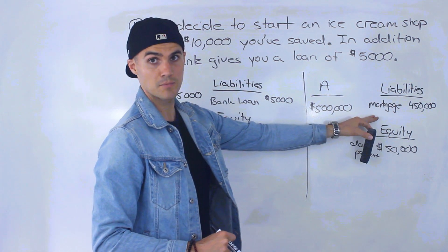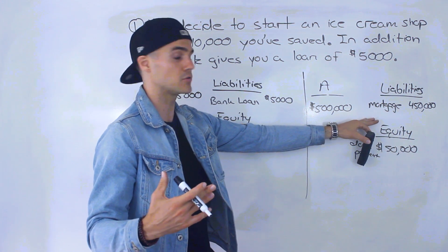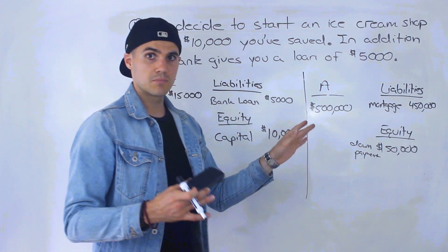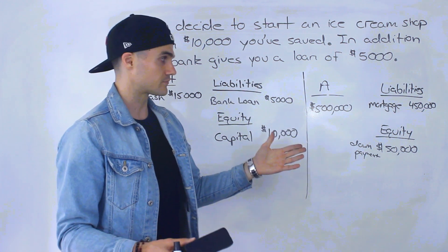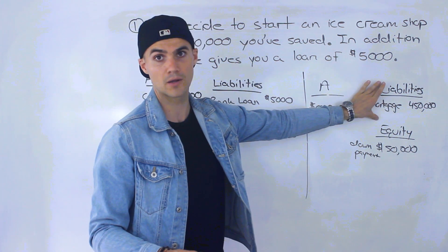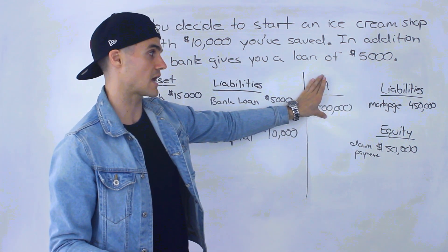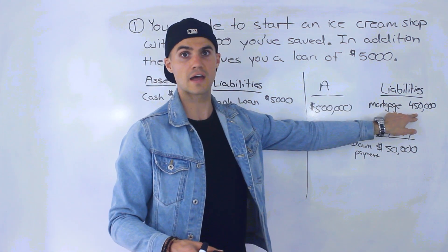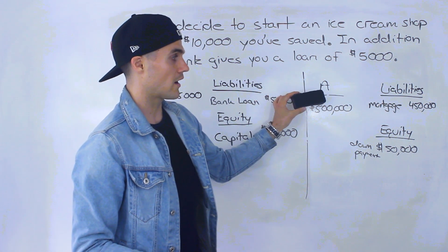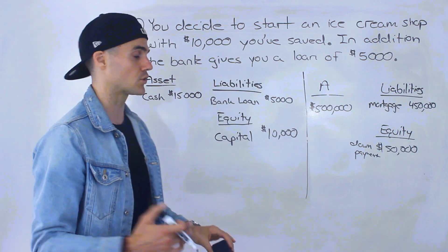What if you start missing the payments on this mortgage loan? Let's say an unfortunate incident happens — you lose your job and can't make the payments anymore. Then there's going to be a personal bankruptcy filed. And when there's a bankruptcy, who gets dibs on the house and the assets? The creditors — the bank would. You would no longer own the house, and the bank would receive it to make sure their $450,000 is paid back.